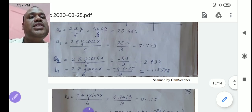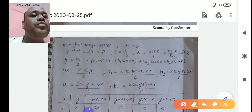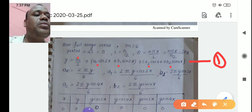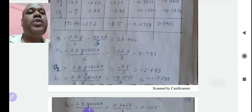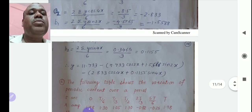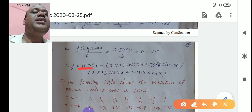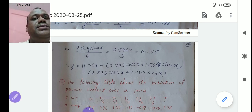Substituting all values into the Fourier series equation: Y = 23.466/2 + 7.733·cos 2x + b1·sin 2x − 2.833·cos 4x + b2·sin 4x. Putting a0/2 = 11.733 and all other coefficients gives us the final answer. That completes the first problem.